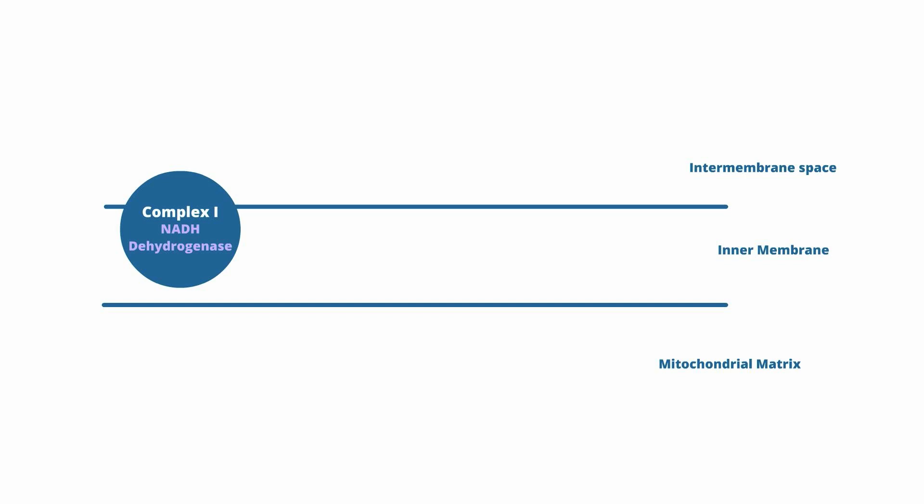Remember, when we formed NADH we represented it as NADH plus a hydrogen ion. This representation reflects the fact that there is a hydride ion represented by the H in NADH, and one hydrogen atom represented as H+. The hydride ion is passed as an electron from complex to complex in the ETC, while the hydrogen atom is shuttled by each of the complexes into the intermembrane space to create a hydrogen ion gradient. This gradient will later be used by oxidative phosphorylation to create ATP.